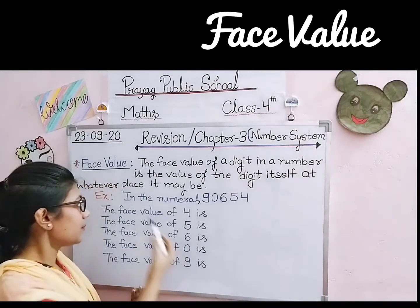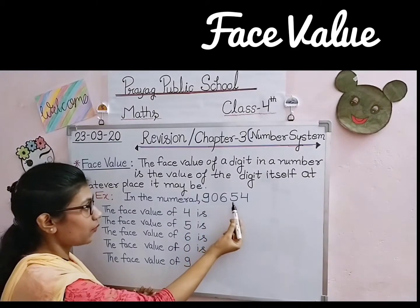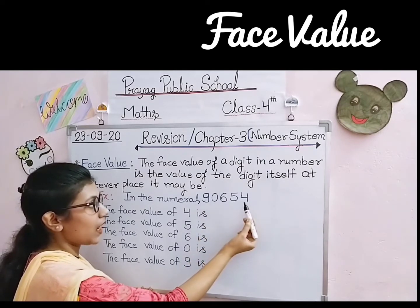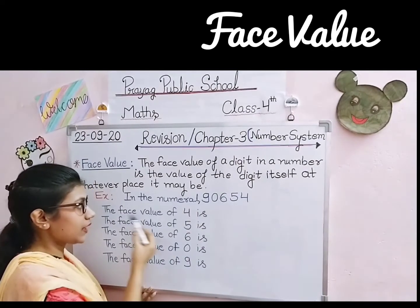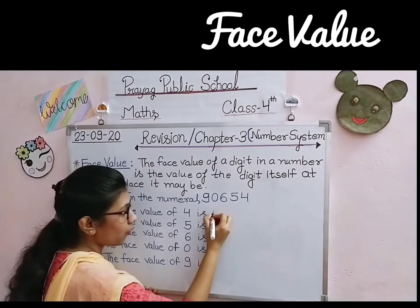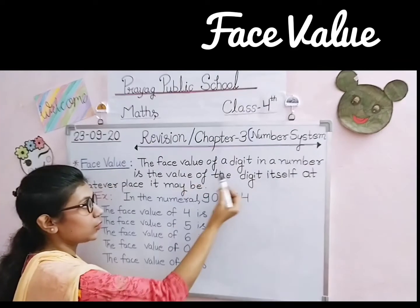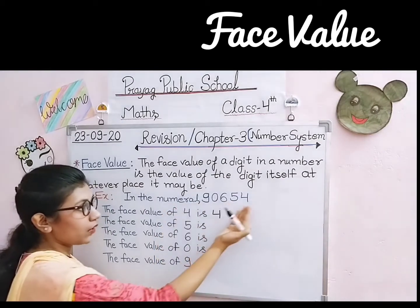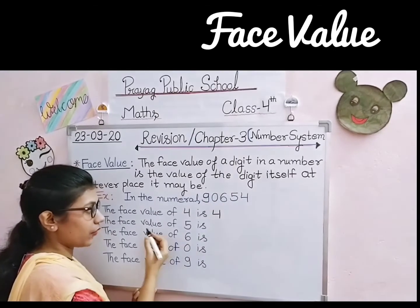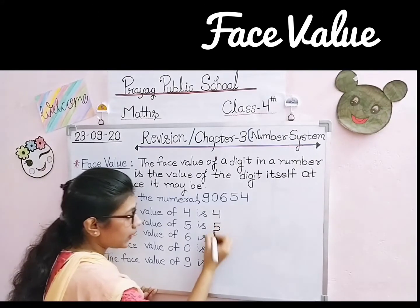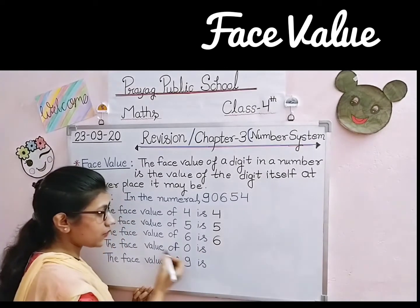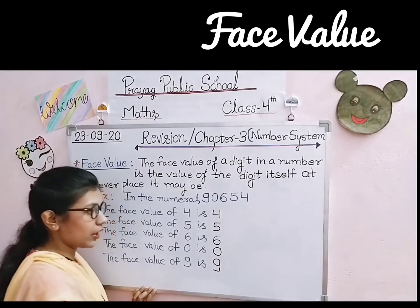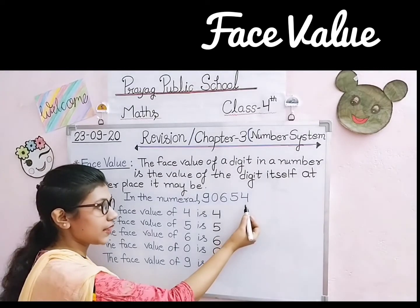Let's take one example. In the numeral 90,654, हम इसे 90,654 पढ़ते हैं। इस numeral में हर एक digit की face value को हम लिखेंगे। The face value of 4 is 4, because the face value of a digit in a number is the value of the digit itself. चाहे number कितना भी बड़ा क्यों न हो, जो digits given होंगे वो खुद अपनी face value होंगे। The face value of 5 is 5, the face value of 6 is 6, the face value of 0 is 0, and the face value of 9 is 9.